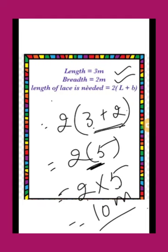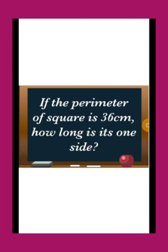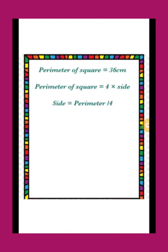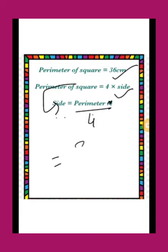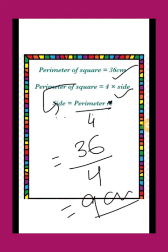Next: if the perimeter of a square is 36 centimeter, how long is one side? In this problem the perimeter is given and you have to calculate the length of one side. The perimeter of the square is 36 centimeter, so one side of the square is 9 centimeter.